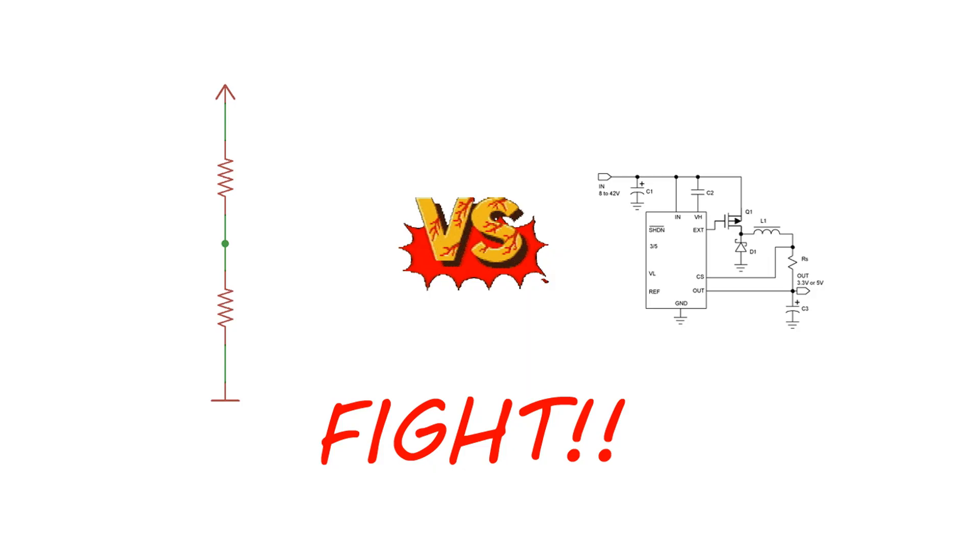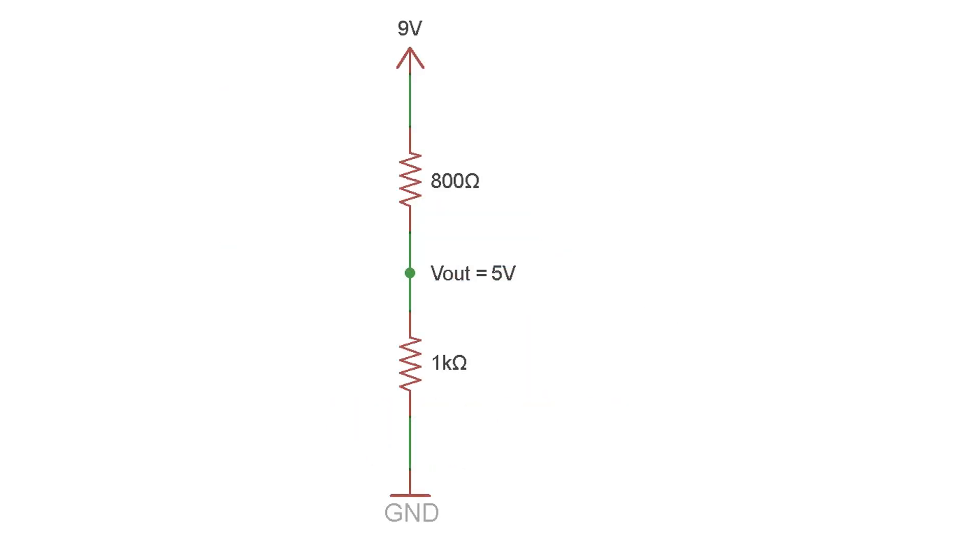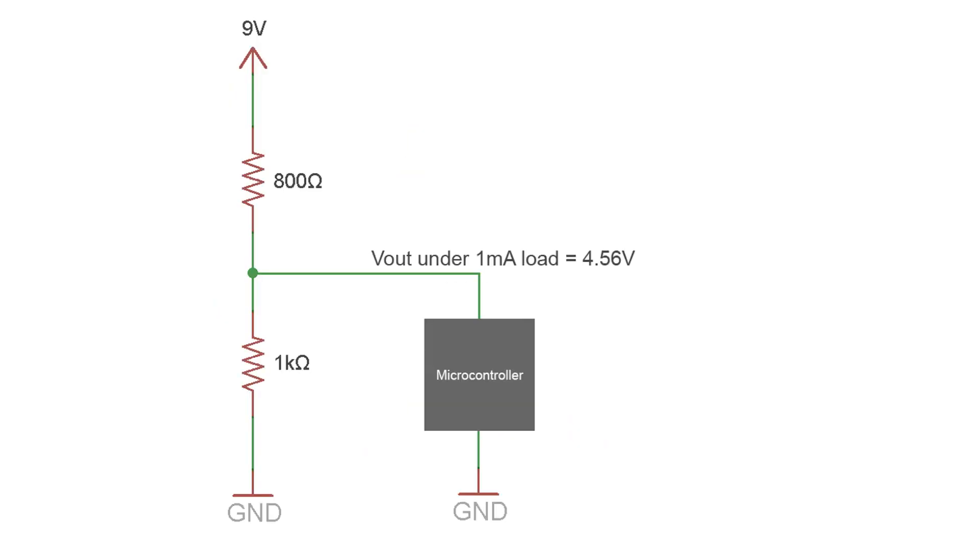For example, here's an unloaded voltage divider giving me 5 volts. When I connect a microcontroller that draws just 1 milliamp, the voltage drops to 4.5 volts. And that's not so bad, the microcontroller will still work.